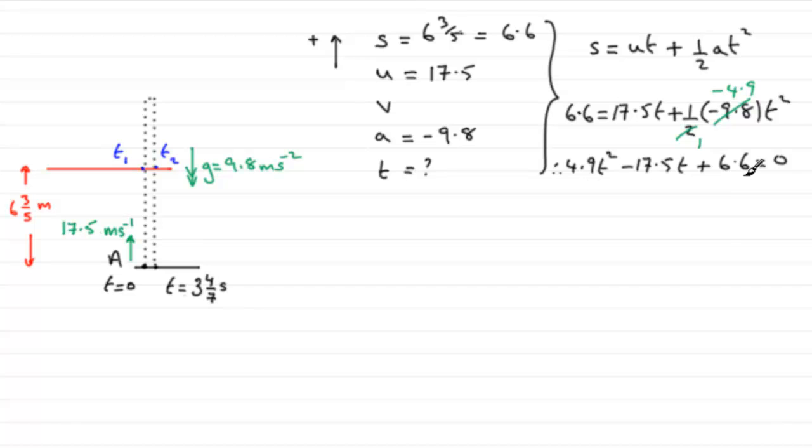Now I've got a feeling that this is going to factorize. You could multiply it through by ten to get rid of these decimals. If I did do that, we're going to have therefore 49t squared minus 175t plus 66 equals zero. You don't obviously have to do this, you could just find t by using the quadratic formula.